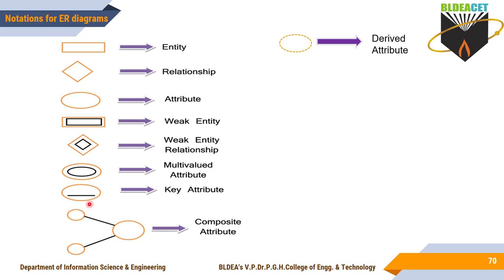Key attributes are represented with an oval using an underline. If you are using an underline inside the oval, it indicates that attribute is a key attribute. Next is composite attributes — attributes that can be further subdivided into sub-attributes. Those are represented using a branching notation from the main attribute oval.